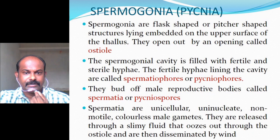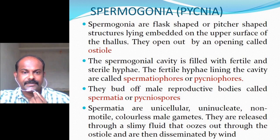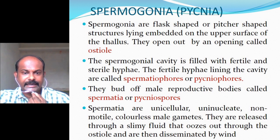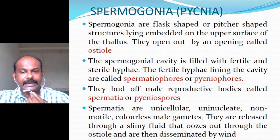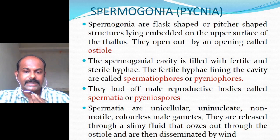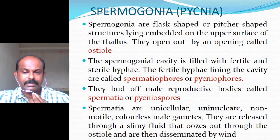Spermogonia are flask-shaped or pitcher-shaped structures lying embedded on the upper surface of the thallus, opening by an opening called the ostiole. The spermogonia cavity is filled with fertile and sterile hyphae. The fertile hyphae lining the cavity are called spermatophores or pycniophores, and they bud off male reproductive bodies called spermatia or pycniospores. Spermatia are unicellular, uninucleate, non-motile, colorless male gametes released through a slimy fluid that oozes out through the ostiole and is disseminated by wind.